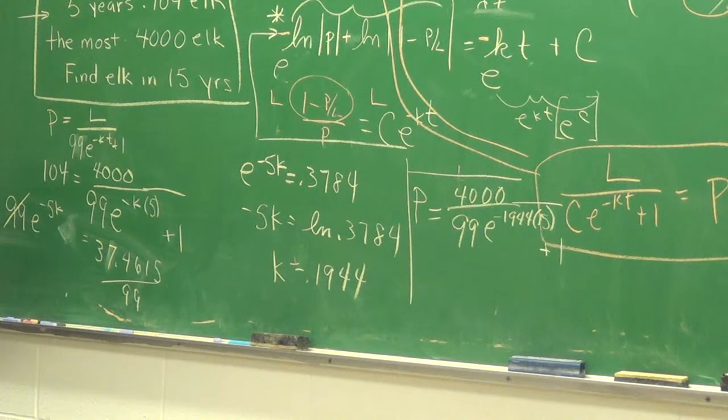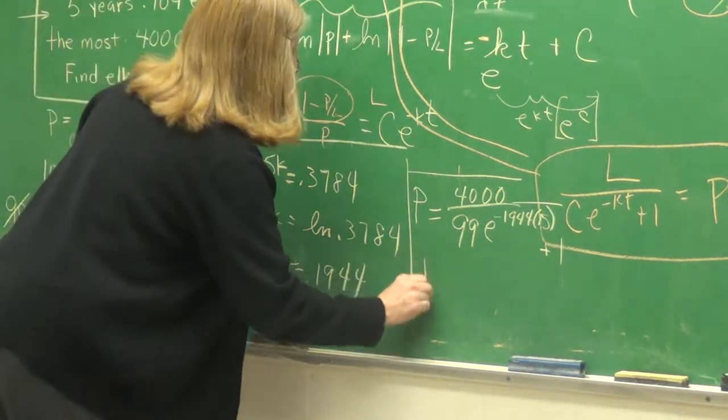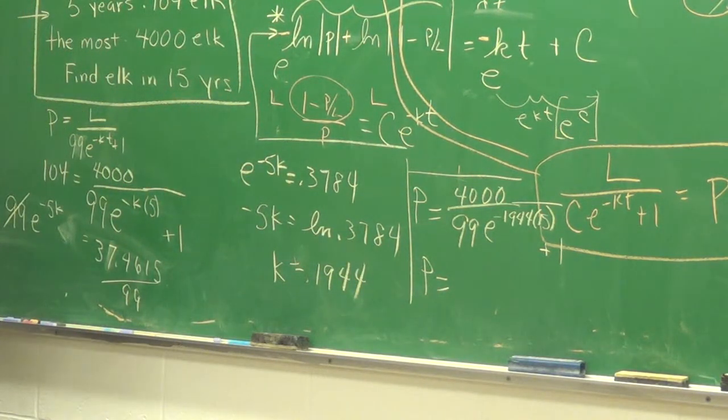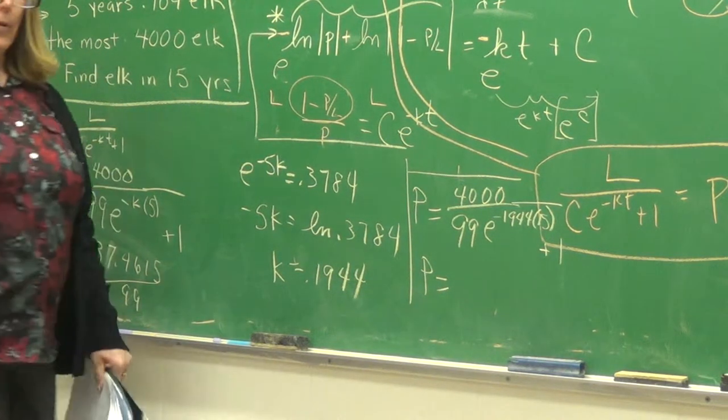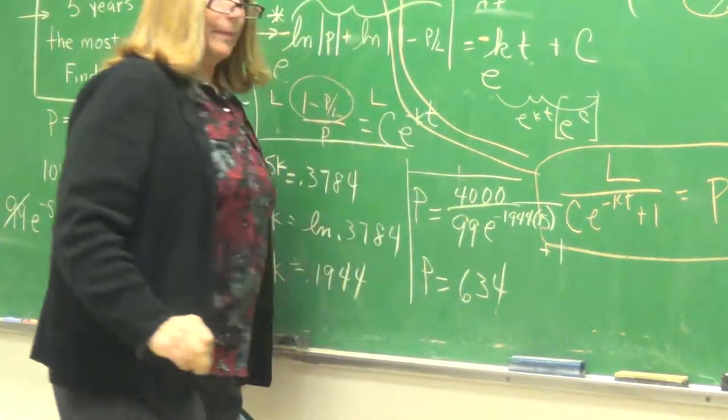Tippy tap. Anyone get a number for me on the final amount in 15 years? I got 634. 634. Anyone confirm? I'm going to see that that sounds right.